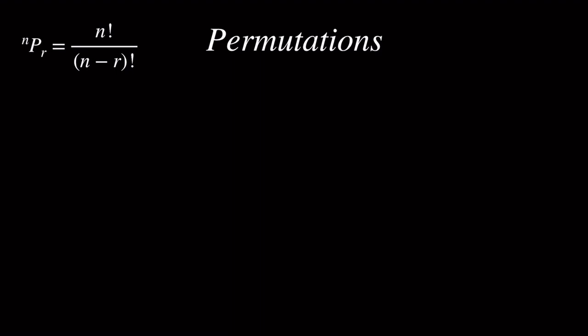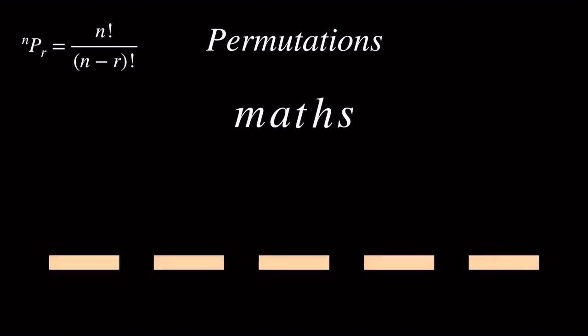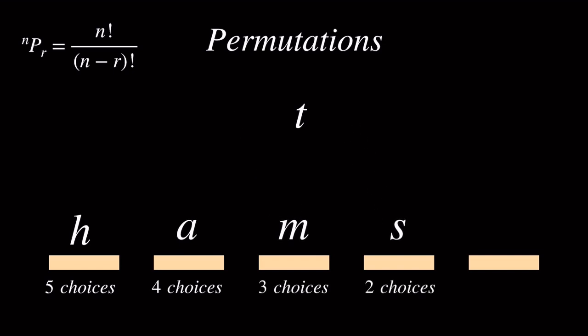We can not only find permutations for choosing officers in a club, but also for arranging letters in a word. For example, how many arrangements of the word maths are there? Let's start by creating 5 empty slots for each letter. The first slot has 5 choices of letters that could go in. We are now left with 4 choices. And now 3 choices for the 3rd letter, 2 choices for the 4th letter, and 1 choice for the 5th letter. So there are 5 factorial permutations, which is equal to 120.